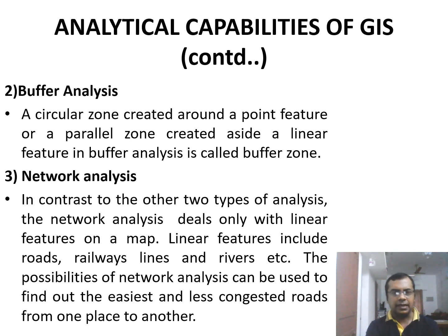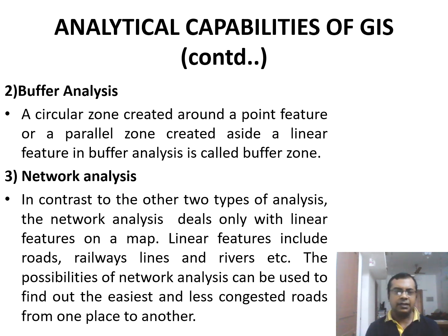Now we can move on to the third analysis, which is network analysis. In contrast to the other two types of analysis, network analysis deals only with linear features on a map. Linear features include roads, railway lines, rivers, etc. This network analysis can be used to find out the easiest and less congested roads from one place to another.